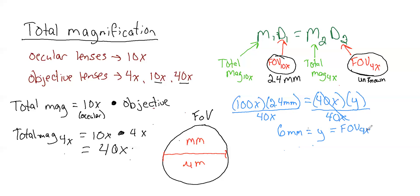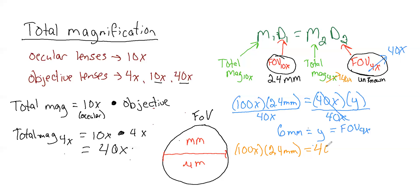We can also do the same thing for 40x. If we change our target from 4x to 40x, the left side of the equation stays exactly the same: 100x times 2.4 millimeters. But the right side changes — instead of 40x, we now need the total magnification of 40x, which is 40 times 10, giving us 400x multiplied by y. Dividing both sides by 400x gives us y equals 0.6 millimeters, which is equal to the field of view at 40x.